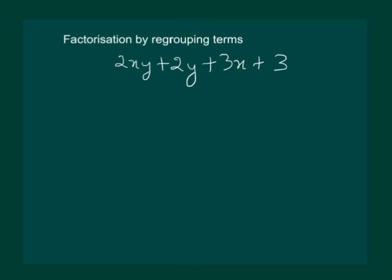But, if we consider the first and the second term, we see that 2 is common and y is also common. Also, if we see the third and the fourth part, we will see that 3 can be taken out common. So, let us proceed by taking out 2y common from the first two terms and 3 common from the last two terms.